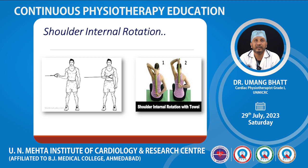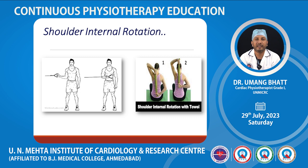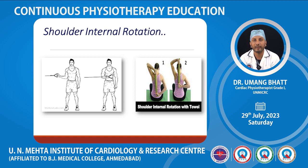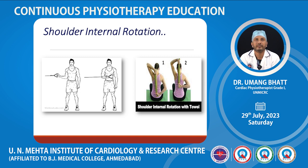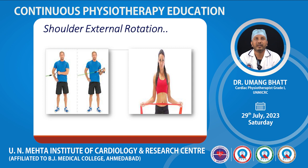Shoulder internal and external rotation exercises are performed by keeping the elbow at 90 degrees and moving the forearm in and out. Moving inward is internal rotation; moving outward is external rotation. Patients can also perform these at home using a towel — moving the towel up and down performs both internal and external rotation simultaneously.